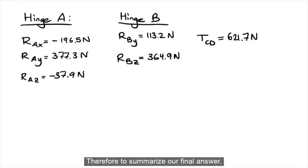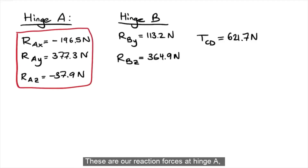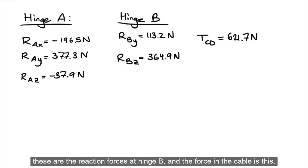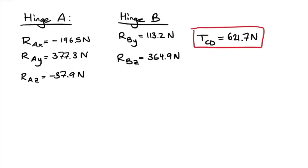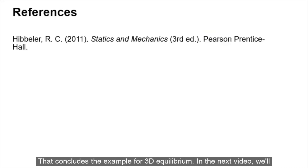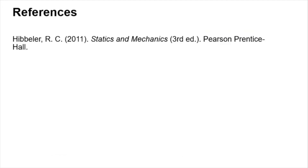Therefore, to summarize our final answer: these are our reaction forces at hinge A, these are the reaction forces at hinge B, and the force in the cable is T_CD = 621.7 newtons. That concludes the example for 3D equilibrium. In the next video, we'll be starting a new section and going over the shear formula.